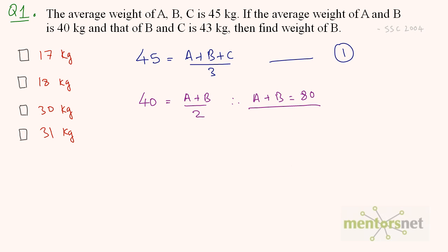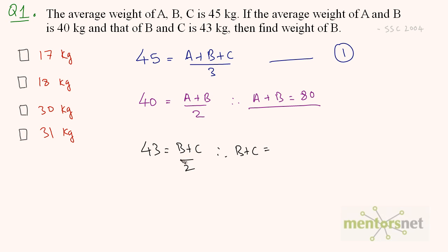The next statement is: the average of B and C is 43 kgs. So 43 is equal to B plus C divided by 2. Therefore, B plus C is equal to 43 times 2, which is 86. And therefore, we can write C is equal to 86 minus B.